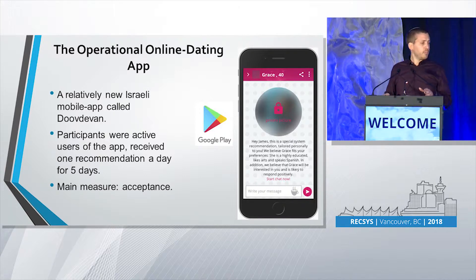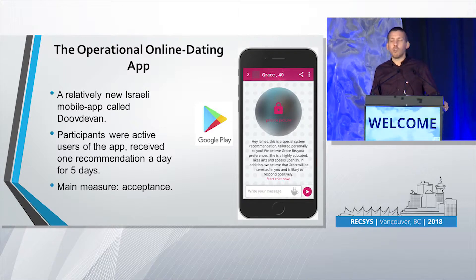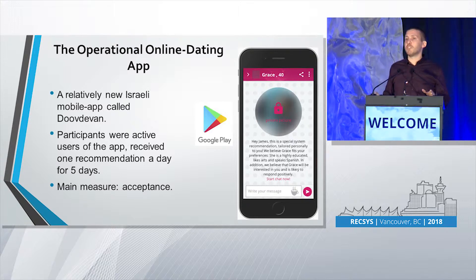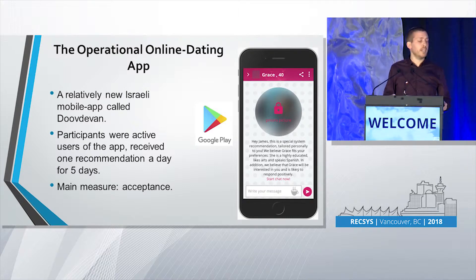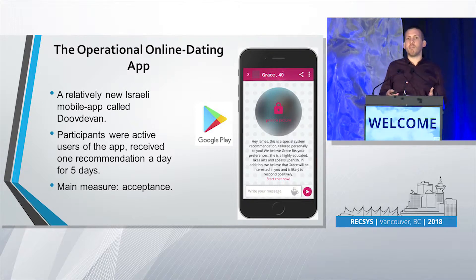After finishing the experiments in the simulated online dating site, we continued and contacted an operational online dating app called Duv Devan. It is relatively new and really an operational online dating app. The participants were active users from the site, and they did not know that they were part of the experiment. We divided them randomly into two groups — one received recommendations with one-sided explanations, the other received recommendations with reciprocal explanations. They received five recommendations in five consecutive days. The main measure here was acceptance, because there is no questionnaire as part of the mobile app.